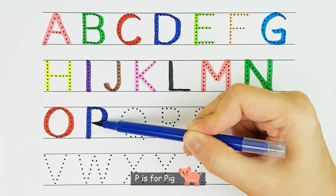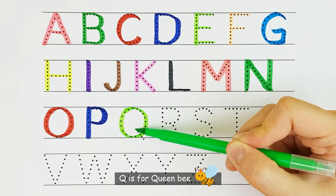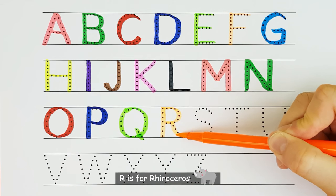P. P is for Pig. P. Q. Q is for Queen Bee. Q. R. R is for Rhinoceros. R.